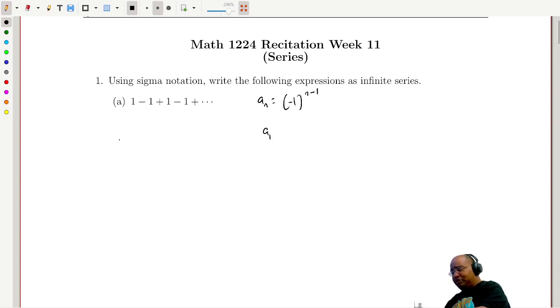And that makes sense here, right? We can look here, a_1 is minus 1 to the 1 minus 1, that's just plus 1. a_2 is minus 1 to the 2 minus 1, which is a negative 1, and so on.